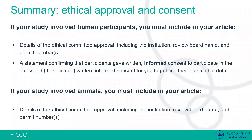To give a summary of ethical approval and consent: if your study involved human participants, you must include details of the ethical committee approval, including institution review board name and permit or approval numbers, and a statement confirming that participants gave written informed consent to participate. If applicable, written informed consent is also needed for publishing identifiable data. If your study involved animals, you must include details of the ethical committee approval, including the institution review board name and permit numbers.